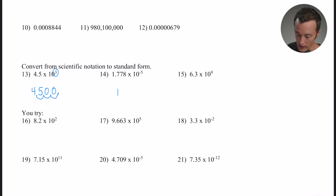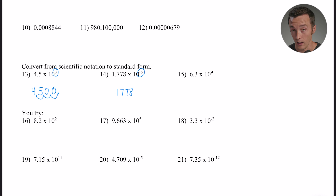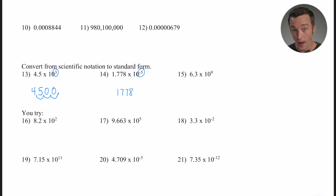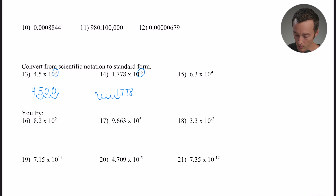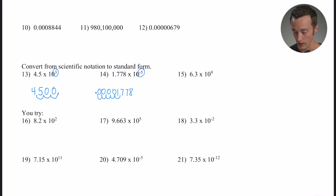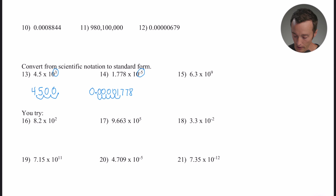Number fourteen: the digits are 1, 7, 7, 8 and the exponent is negative five, so I have to count five places. Since it's a negative exponent, my final answer will be a small number — less than one — so I move the decimal to the left. Starting between the one and the seven, I go one, two, three, four, five — that's where the new decimal point goes. Filling in zeros as placeholders gives 0.00001778.